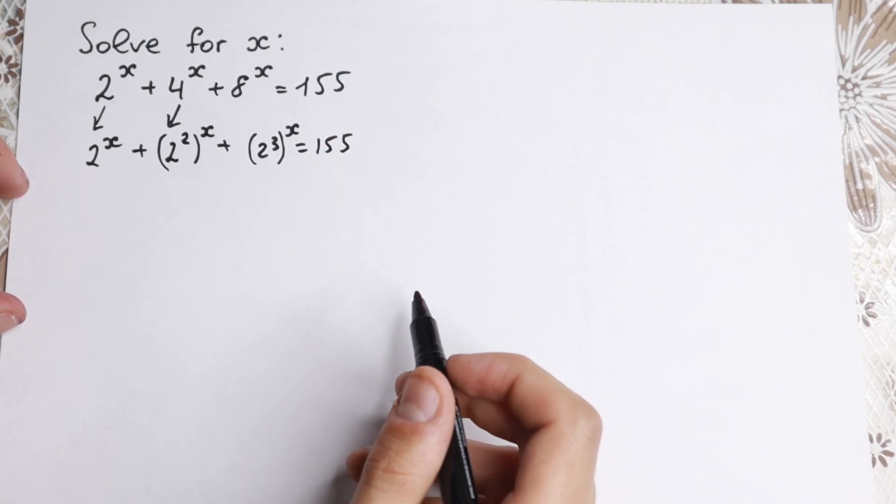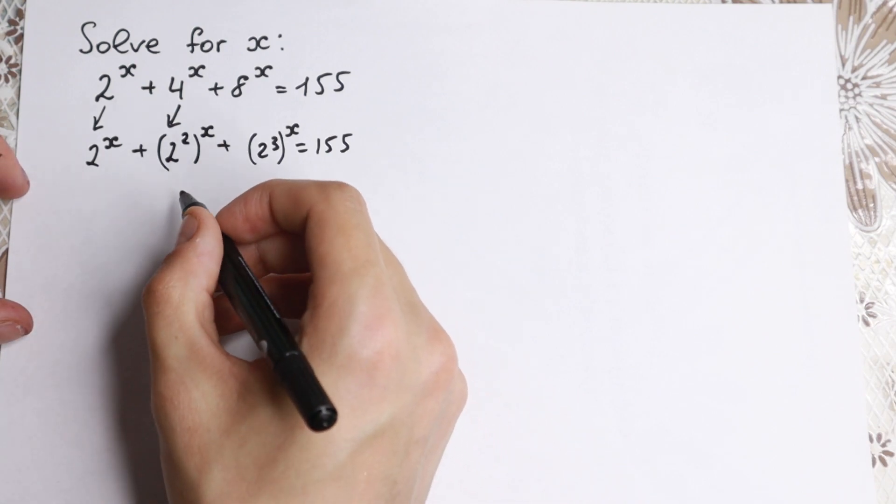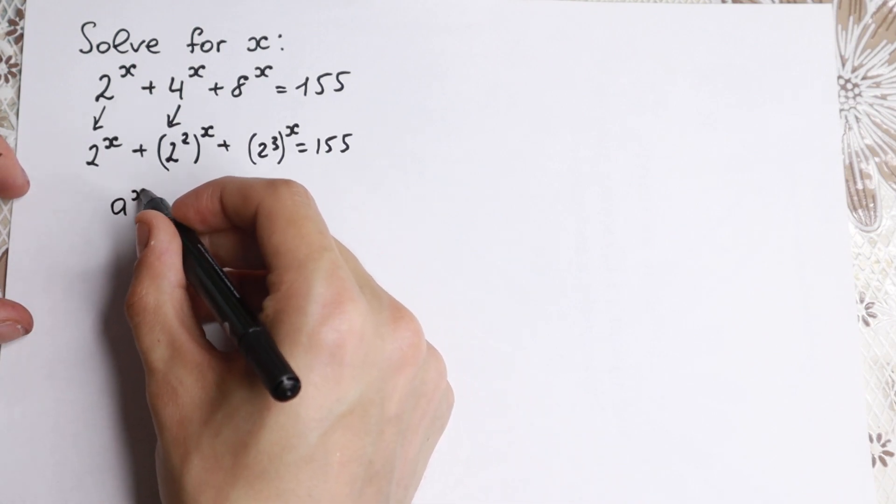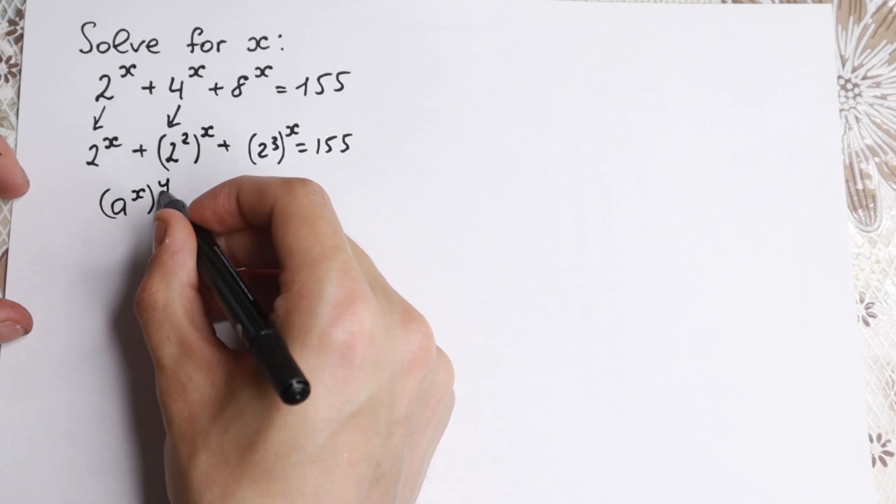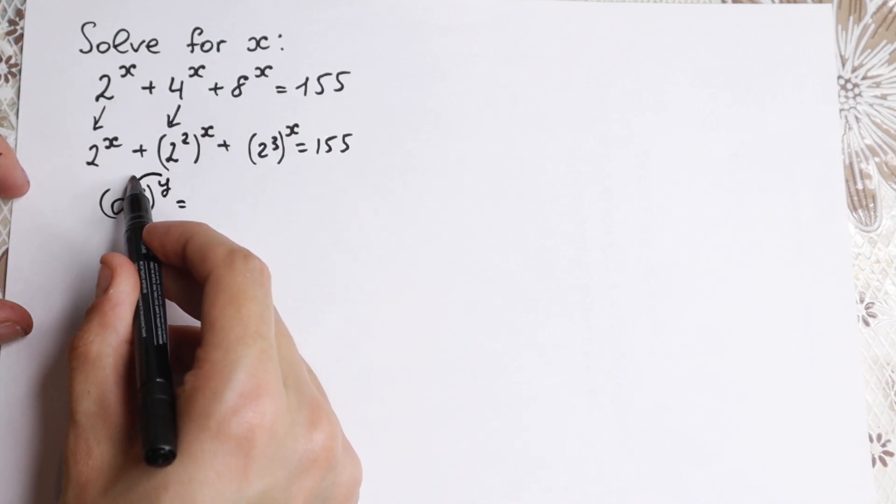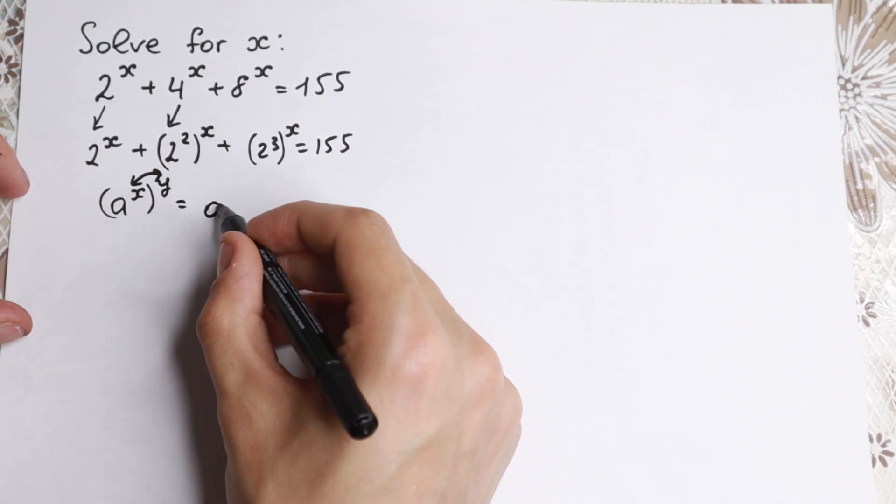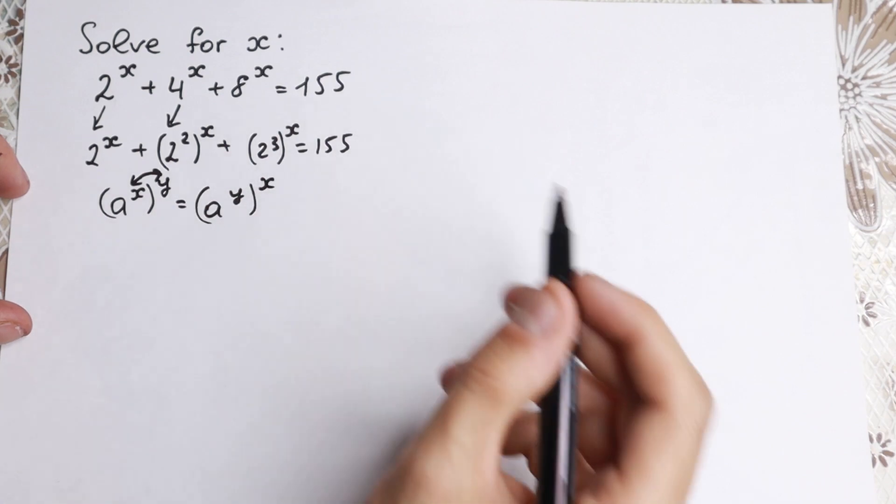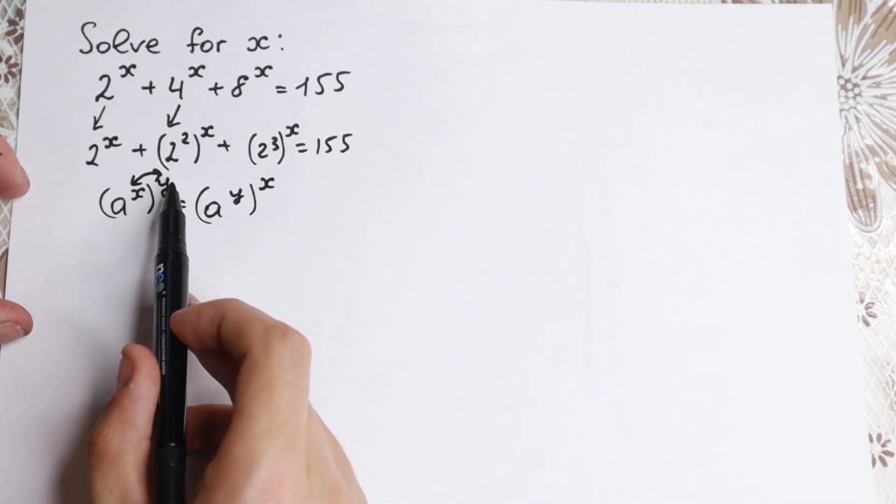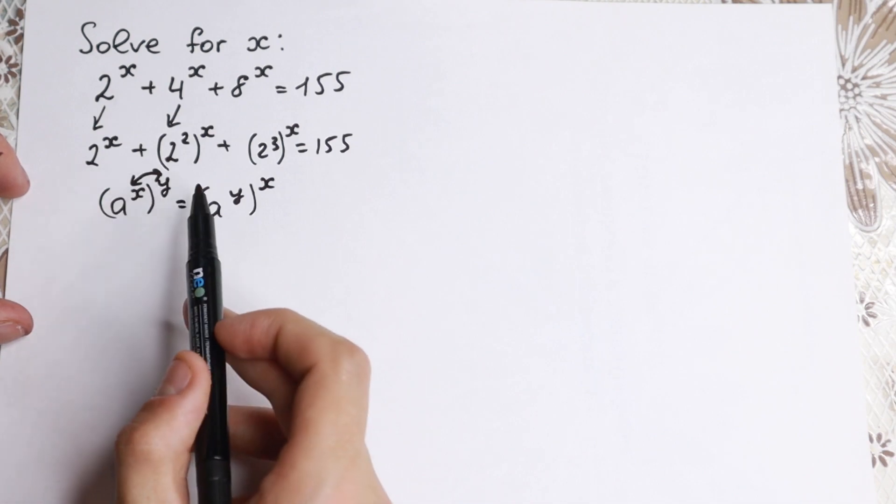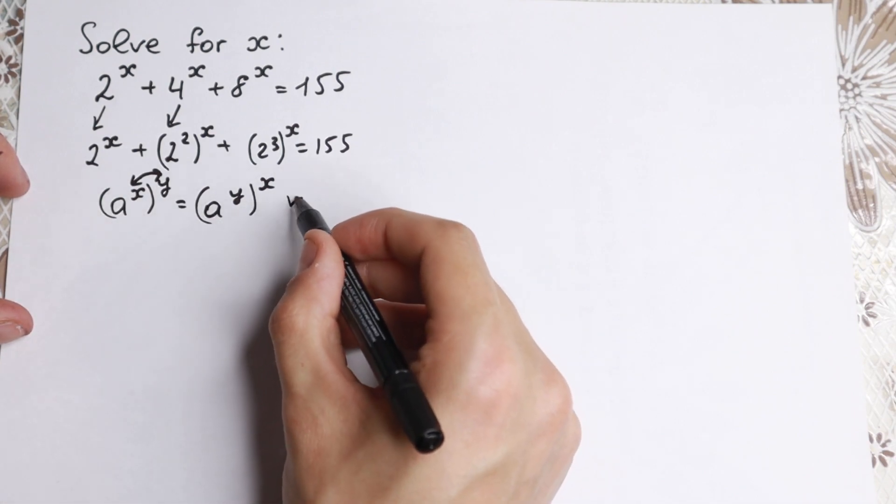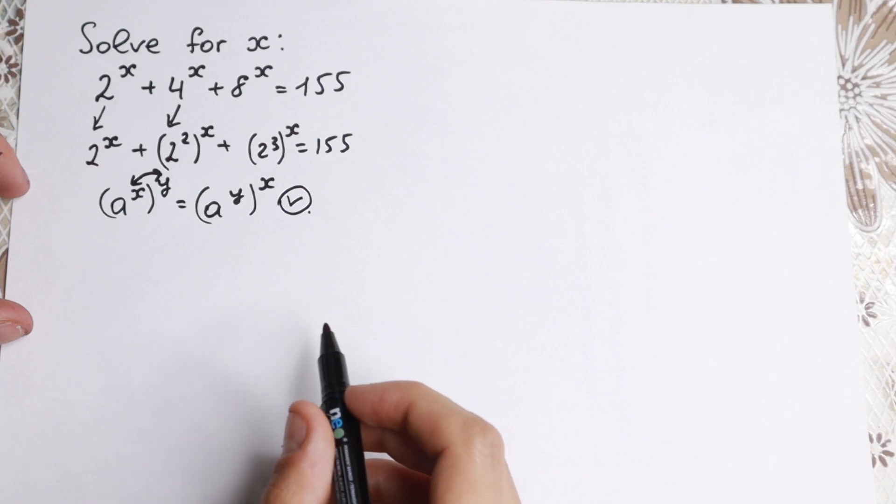And right now I want to show you a rule of interchange, a really good rule if you are talking about powers. So we can write this a to the power x raised to the power y, we can change these powers, this exponent, and we can write it as a to the power y raised to the power x. We can do this because we have a product xy and it doesn't matter in what way, yx or xy. This rule works and is really good for us.